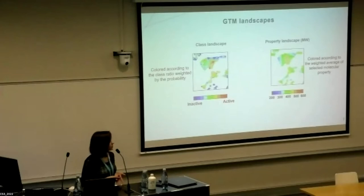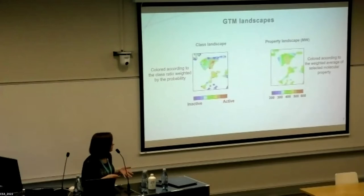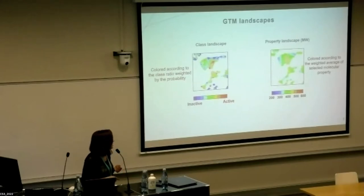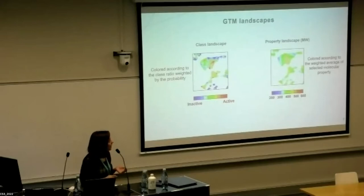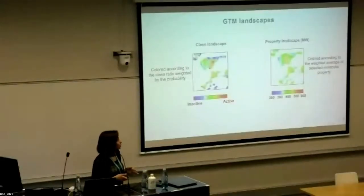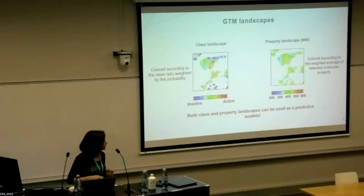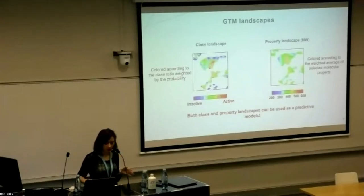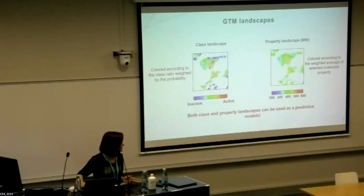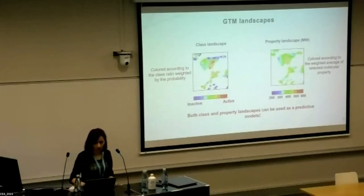GTM also allows building different types of landscapes — one map can be colored by different schemes. For example, a class landscape with active and inactive compounds creates an activity landscape where you can spot different ratios of classes. For property landscapes, you can color by molecular weight distribution and see the average property of compounds in each area. Both landscape types can serve as predictive models for class or property predictions.